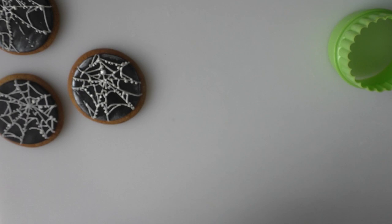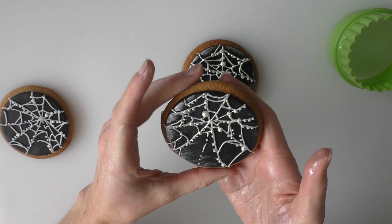And you can do them with different colored backgrounds. So you might want to do a white cookie with black piping on instead. So that's one that I did earlier.